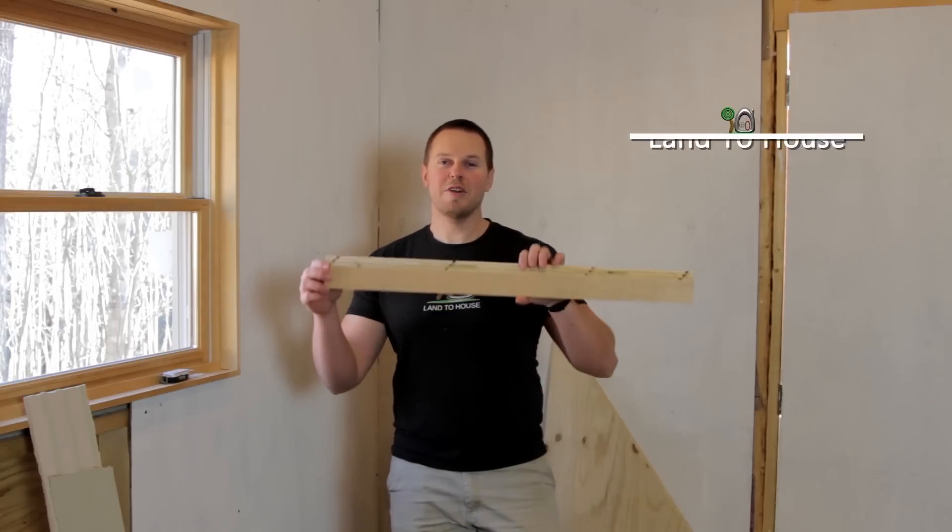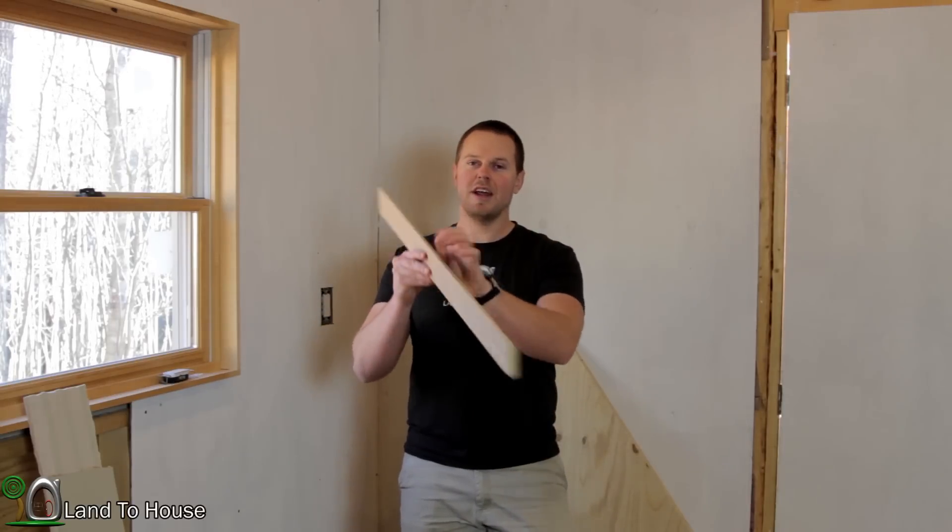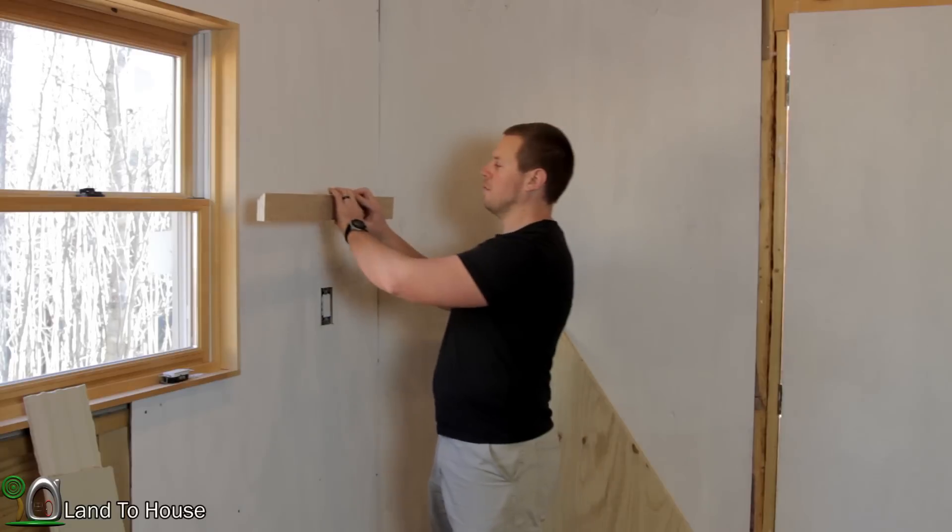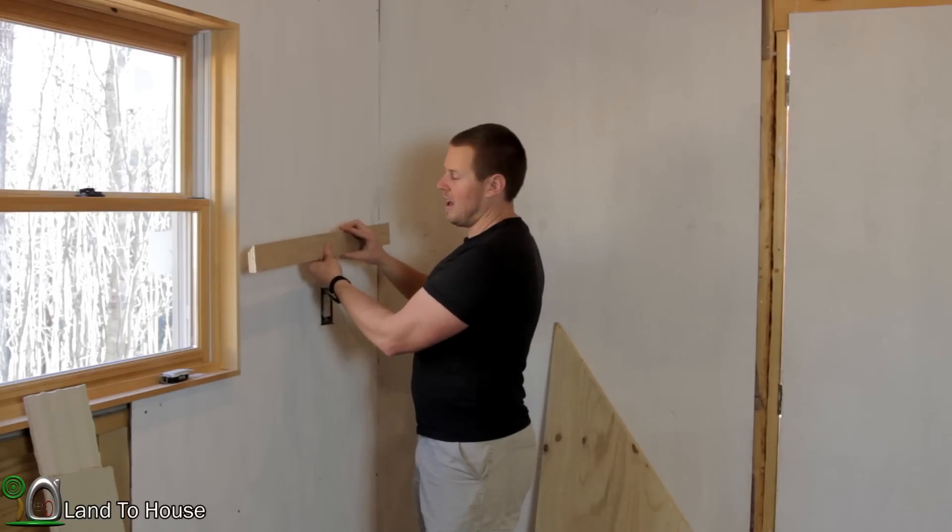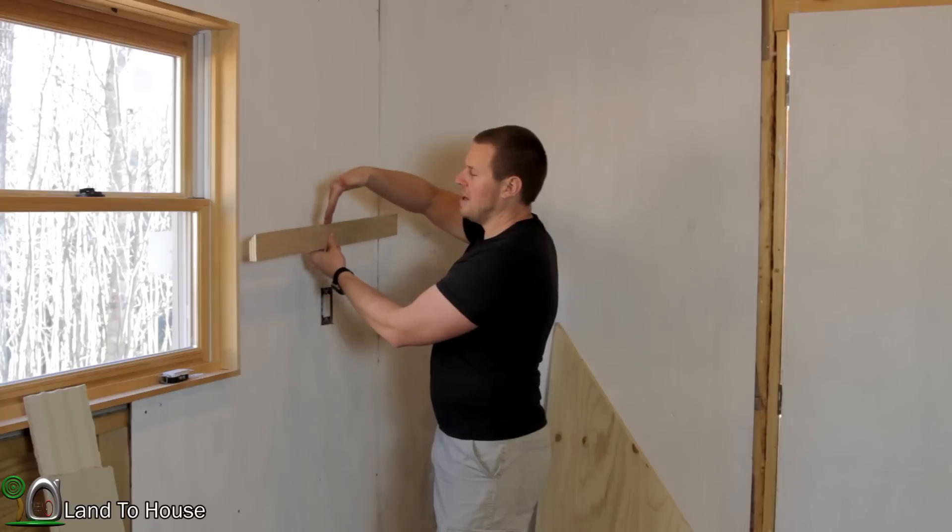I was doing some research on the French cleat method of tool storage in a workshop, basically cutting a piece of plywood at a 45-degree angle where it will go against the wall and then the opposite side of that 45 kind of locks into place to prevent whatever you're hanging from falling off.